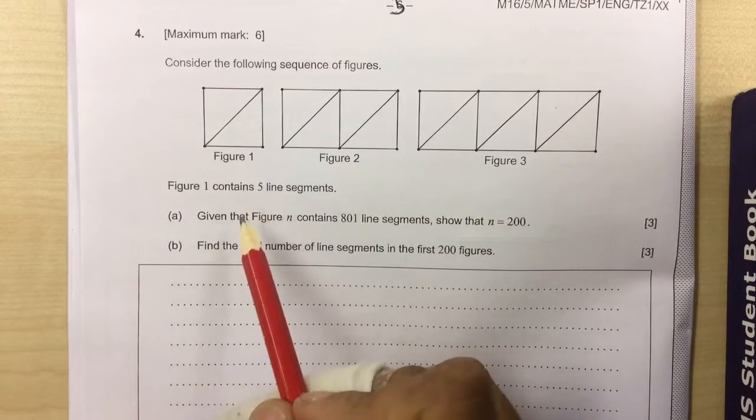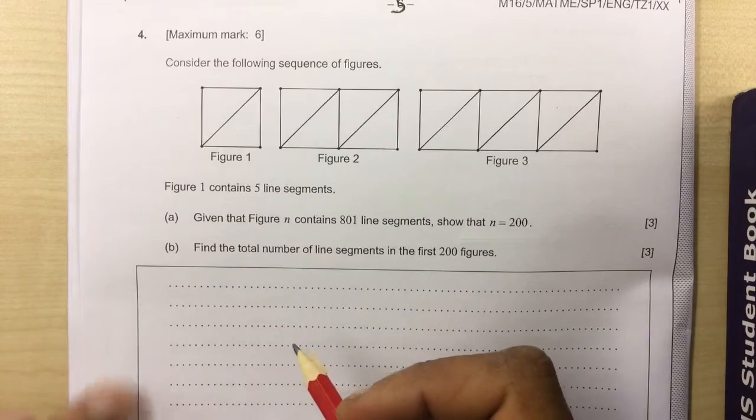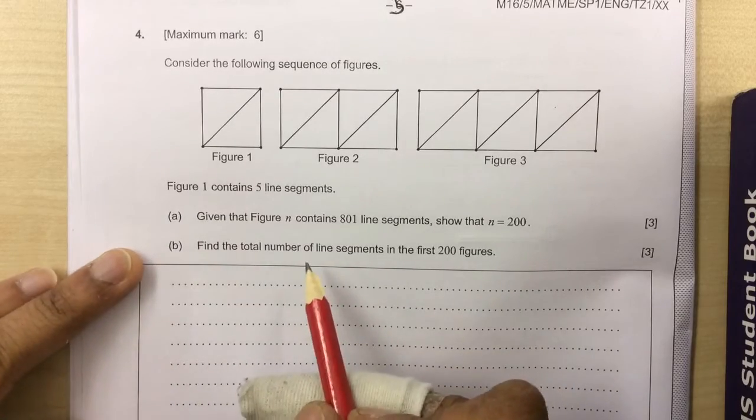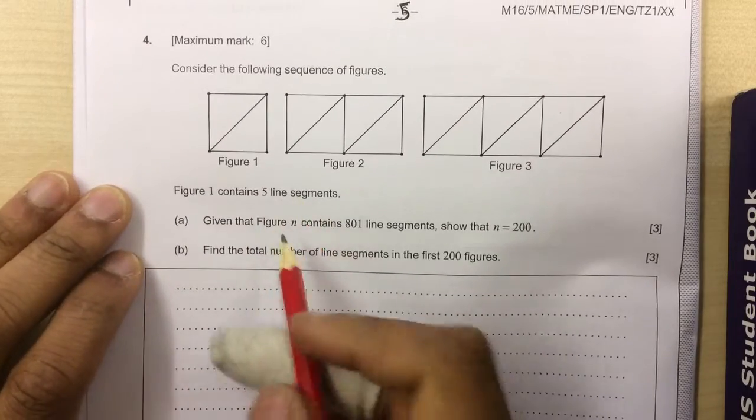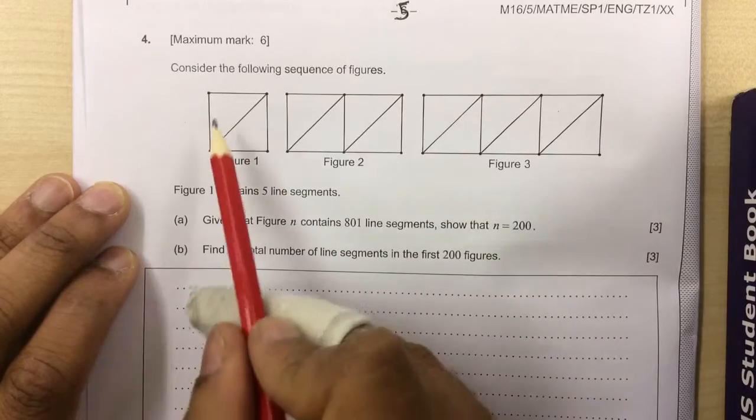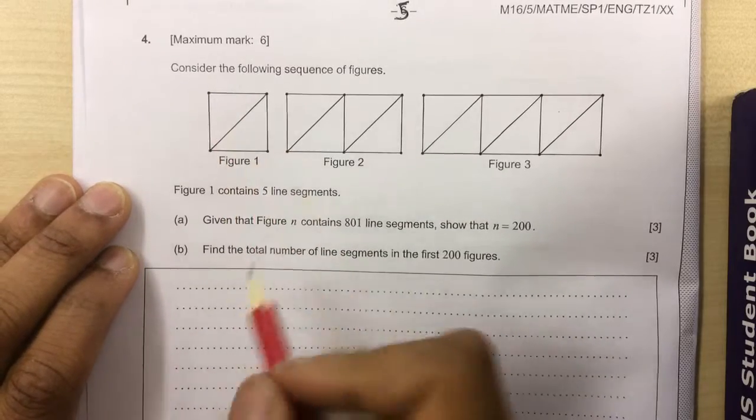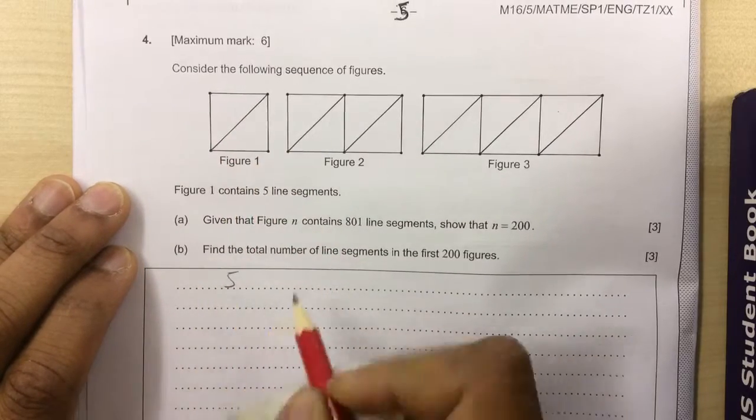Question 4. We've got what appears to be an arithmetic series. It says figure 1 has got 1, 2, 3, 4, 5. So we can say 5 is the first one.